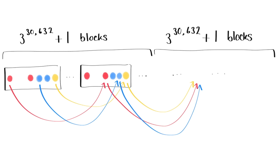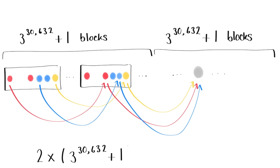And now the focus point can't be red, blue, or yellow without making a monochromatic arithmetic progression of length 3. So we've shown that when there's this incredible number of beads — 2 × (3^(30,632) + 1) × 30,632 — when there's this many beads and when our beads are coloured in three colours, then there must always be a monochromatic arithmetic progression of length 3. Which proves van der Waerden's theorem in the case n equals 3, k equals 3.